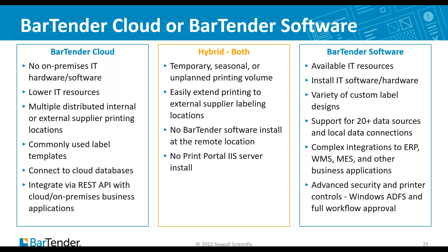For hybrid customers who have Bartender software already, they can add and use Bartender Cloud for temporary, seasonal, or unplanned printing volume. If they add a new customer, they can easily extend printing to external supplier labeling locations. In both cases, they do not need to install additional Bartender software or an additional print portal server. For Bartender software customers on the other end, they will have available IT resources, will want to install and manage their own IT software and hardware, and in many cases will have a variety of custom label designs. They will also want to take advantage of more advanced capabilities in terms of connecting to many different data sources, integrating to different business applications, and leveraging more advanced security and printer capabilities in Bartender software itself.